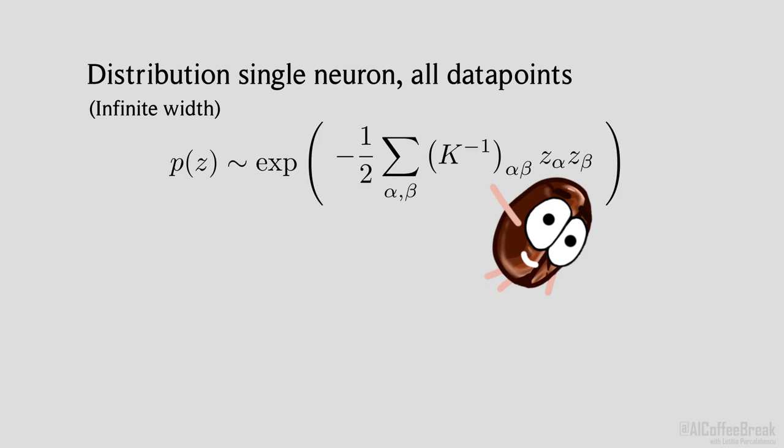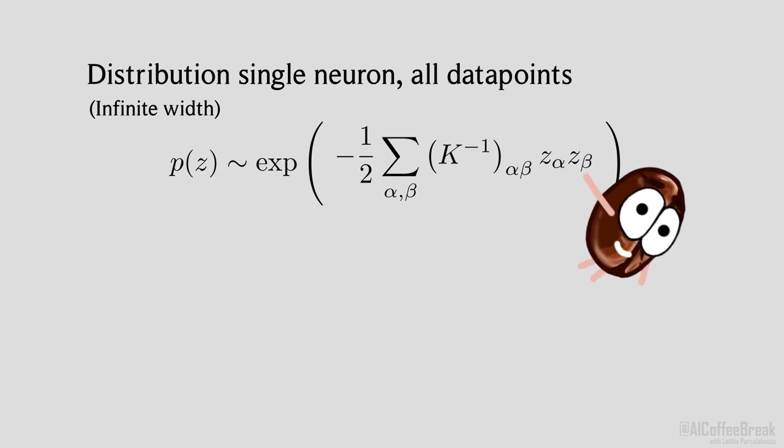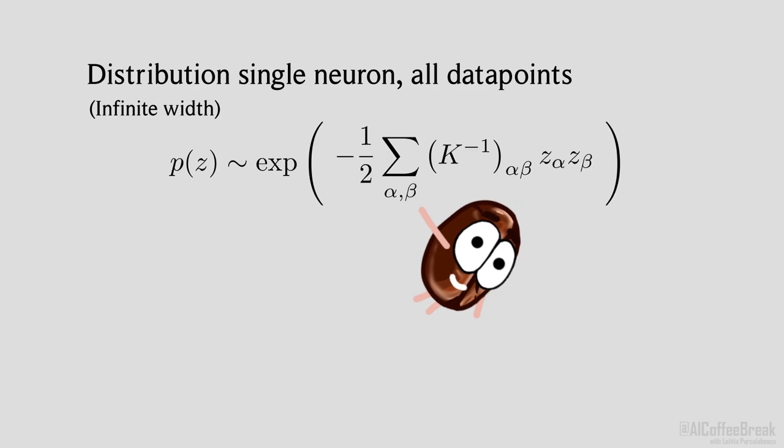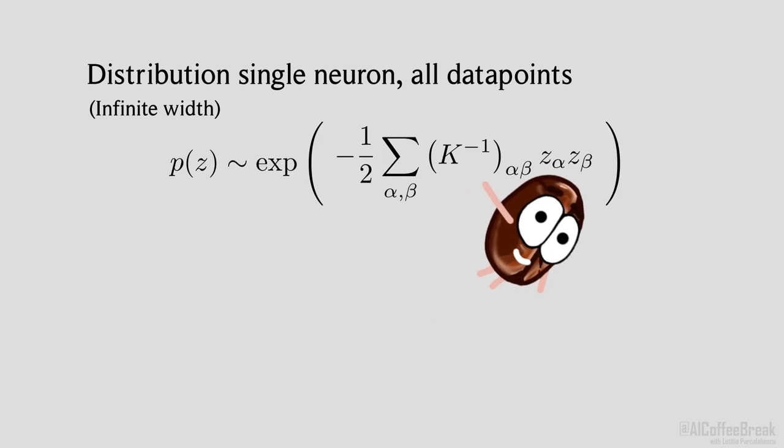The covariance matrix can also be viewed as a kind of kernel or similarity metric. You can take two data points and the kernel will tell you how similar their resulting neuron distributions will be. For MLPs, the covariance matrix of a layer is a function of the inner product between the post-activation values of the previous layer.